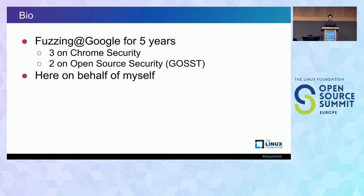Before we do that, I want to say a bit about myself just to give you some context. I've been working at Google for five years, and during this entire time I've been working on fuzzing — specifically on infrastructure for fuzzing, rather than writing different fuzzers. That infrastructure is for developers, ordinary developers, non-security engineers, to fuzz their own code. The first three years was on Chrome, and the last two have been on the newly created open source security team. That being said, the usual disclaimers apply, and I'm only here on behalf of myself today.